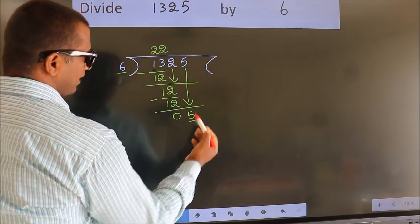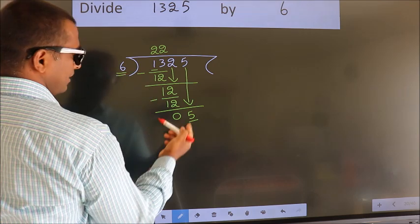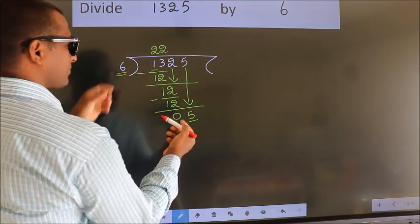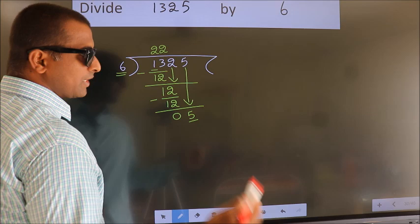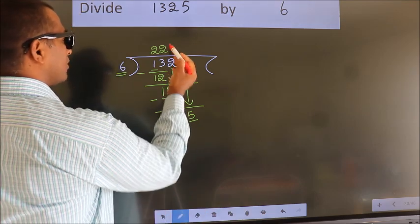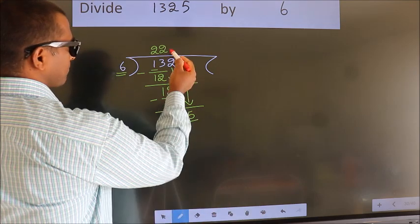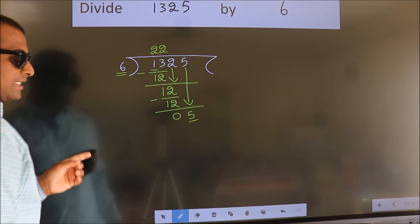Here we have 5. Here 6. 5 smaller than 6. So what many do is they directly put dot take 0 which is wrong.